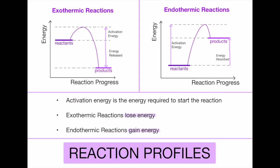Another label you might notice on these diagrams is the activation energy. The activation energy is the amount of energy required to make the reaction happen in the first place, which causes these graphs to rise above the reactant energy level before dropping off into the products. To summarize: exothermic reactions overall will lose energy, and endothermic reactions will gain energy.